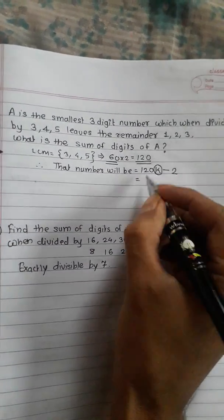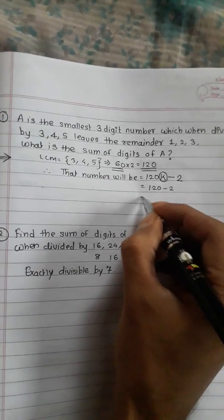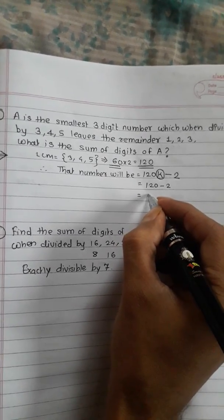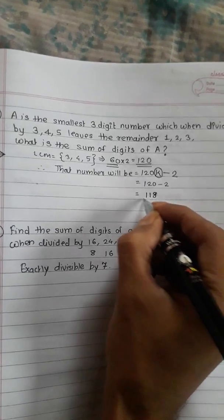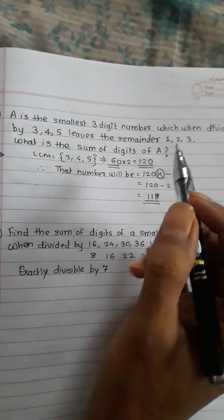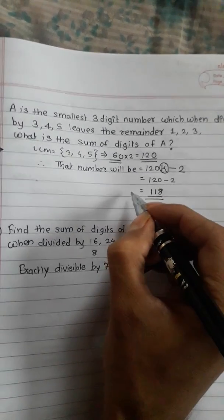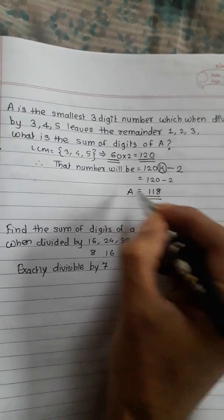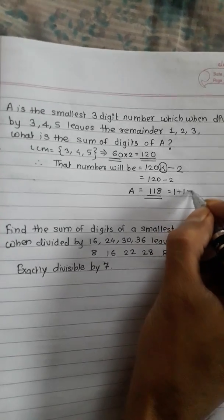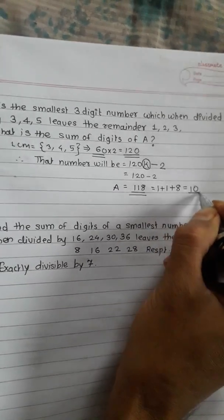We want to find the smallest value, so k should be 1. Therefore the number is 120 minus 2, which becomes 118. The sum of the digits is 1 plus 1 plus 8, which equals 10. So the answer is 10.